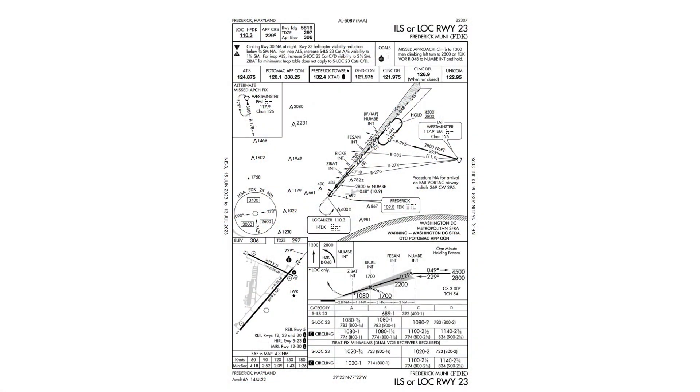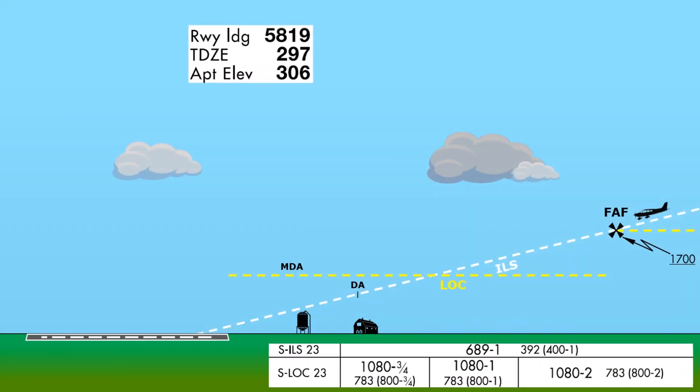Let's put the numbers from the approach plate into our illustration. The touchdown zone elevation, the height of the approach end of the runway above sea level essentially, is 297 feet. For the localizer, the MDA is 1080, and for the ILS, the decision altitude is 689.